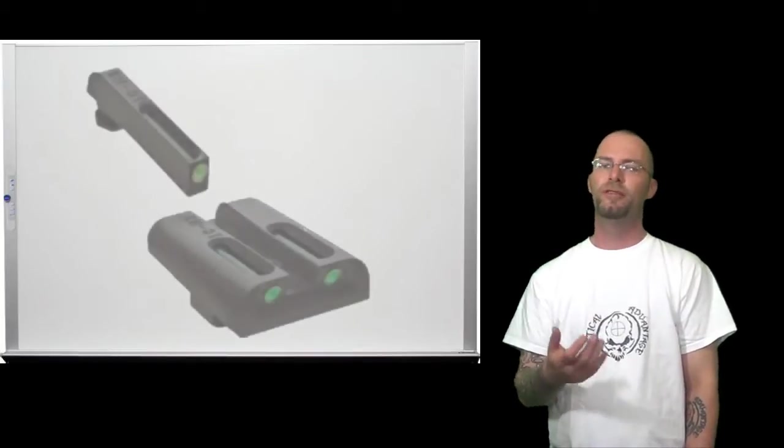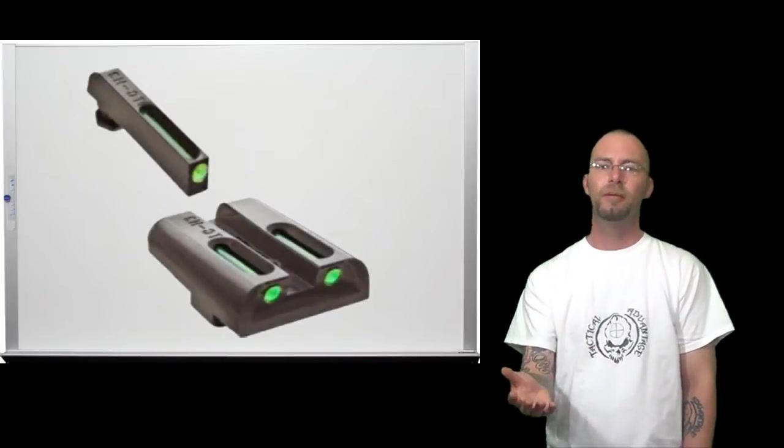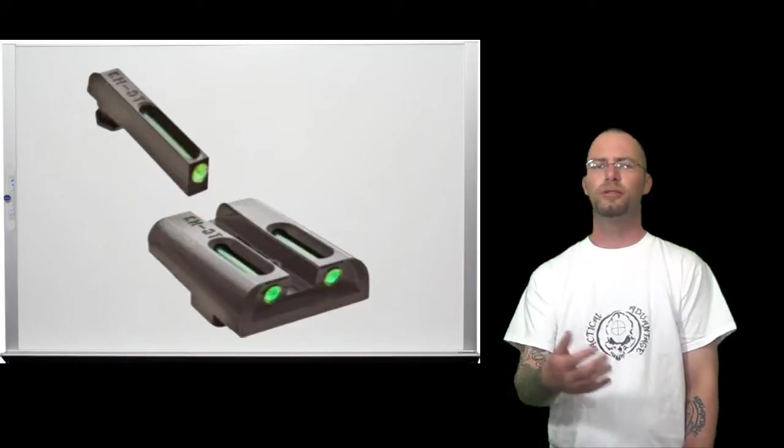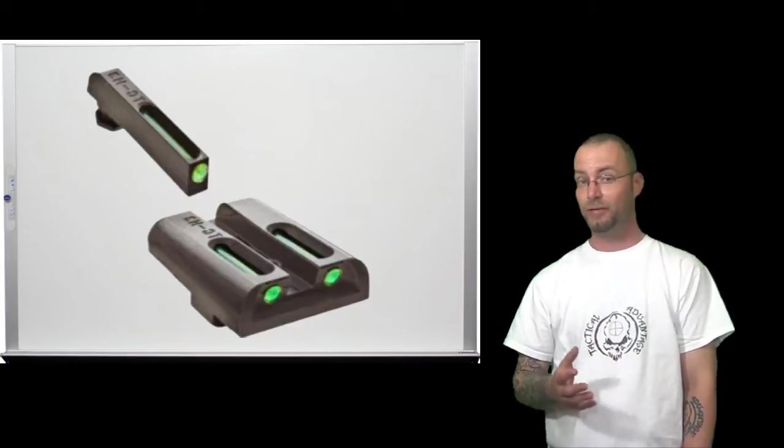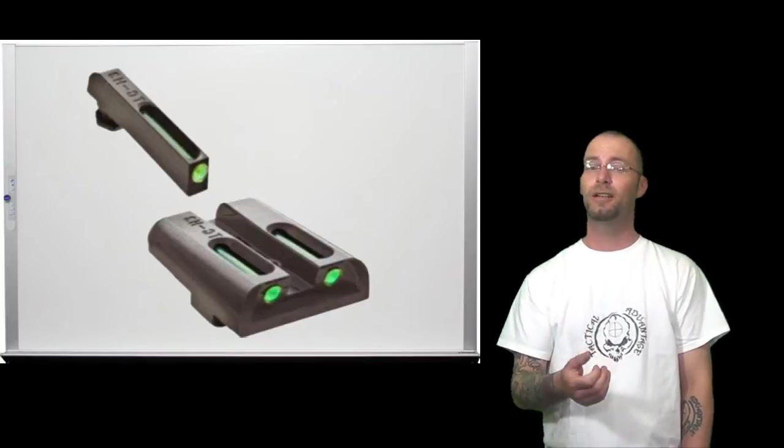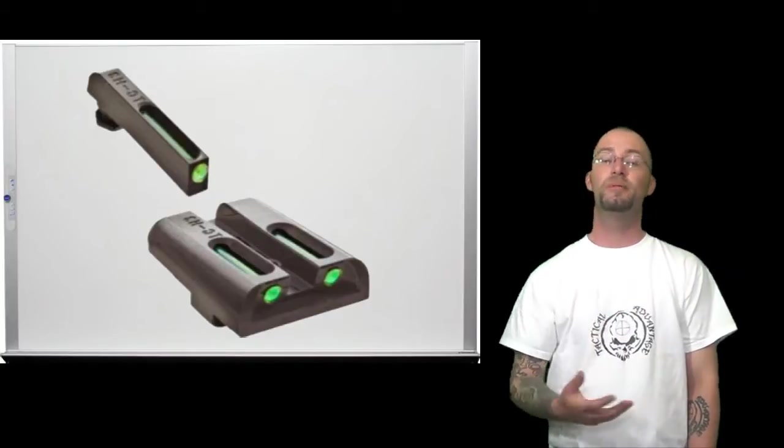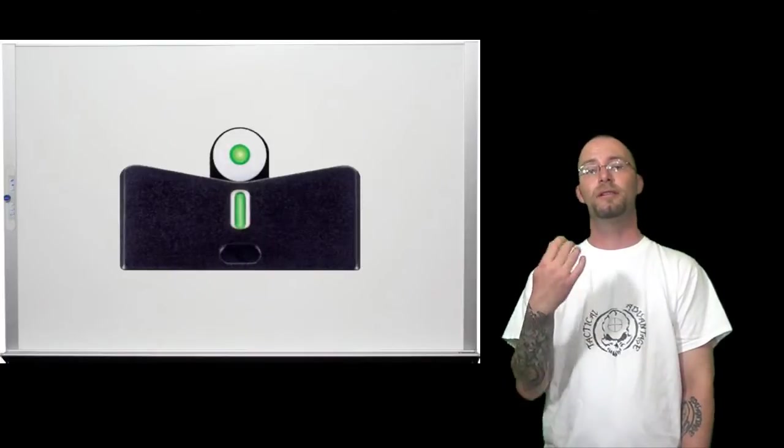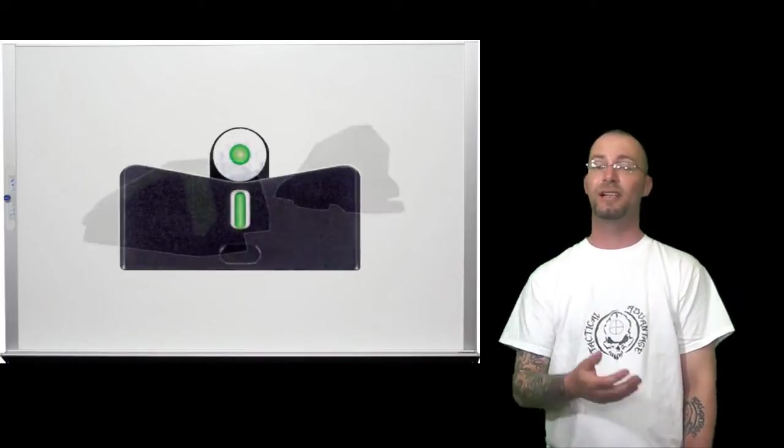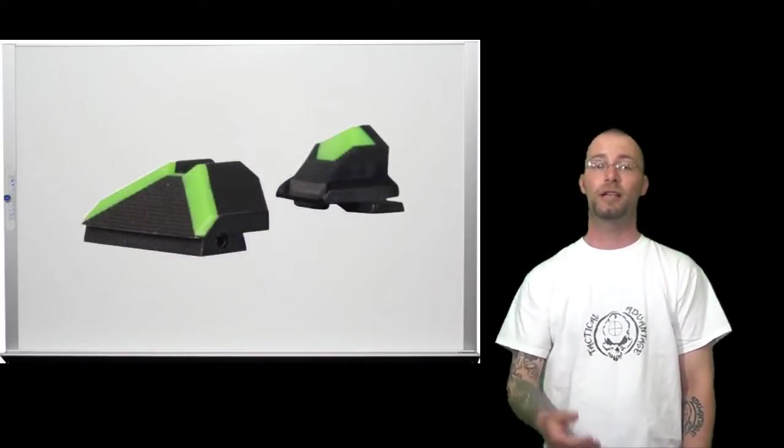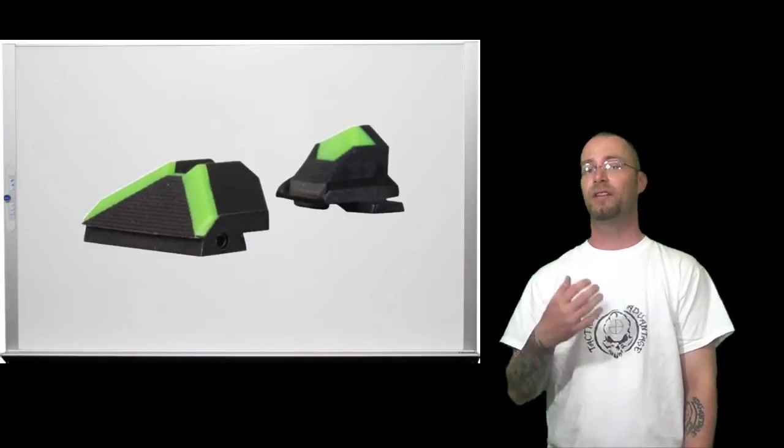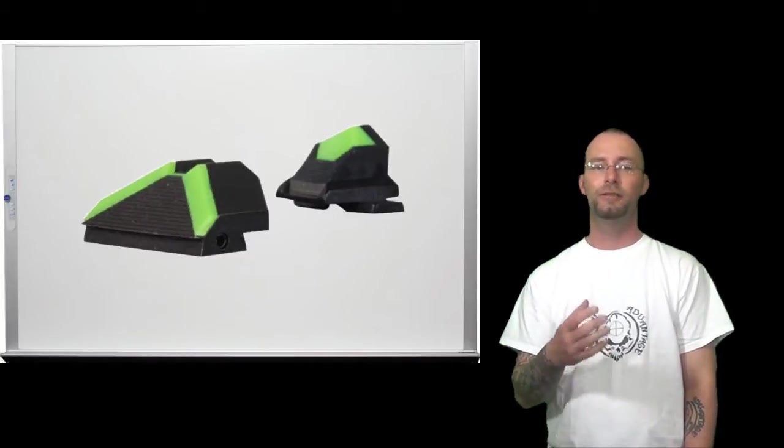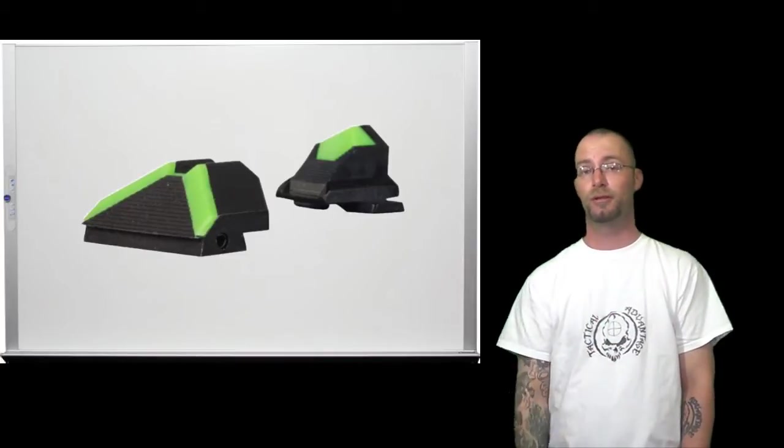Then there are some of the newer variants which utilize a filament or other tool to gather as much light or create as much recognizable deviation between the front and rear sight to assist in speed of acquisition. Some of the players in this segment are XS, Advantage Tactical comes to mind. Both of these companies have novel offerings and really do seem to improve the speed and accuracy with some shooters.